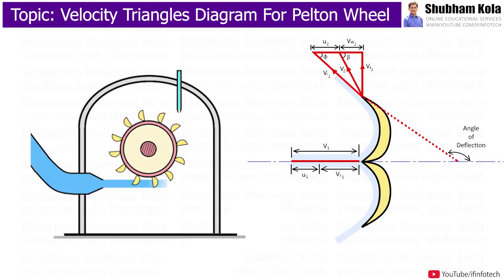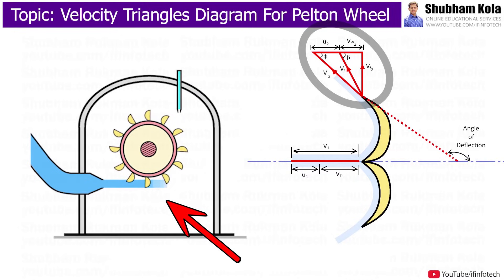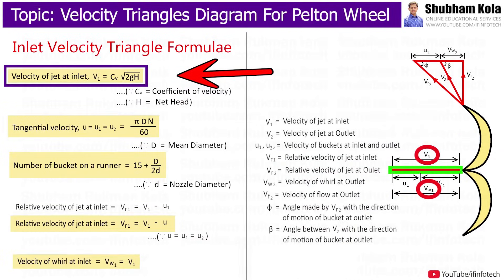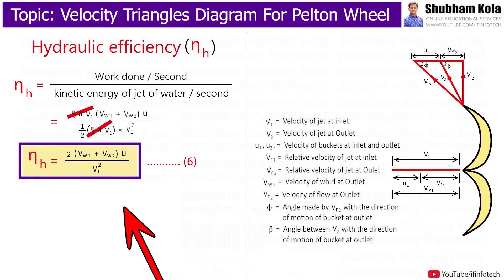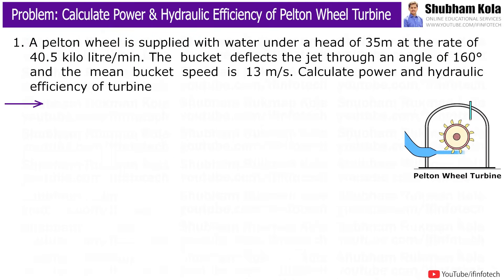In previous video, we have drawn inlet and outlet velocity triangles of Pelton Wheel and we have derived formula of velocity, work done, power and hydraulic efficiency of Pelton Wheel Turbine. So, with the help of those equations, today we are going to solve this problem.